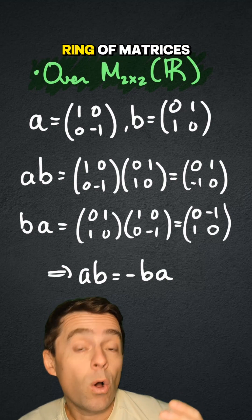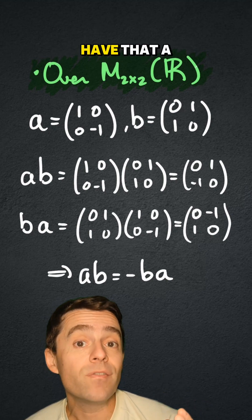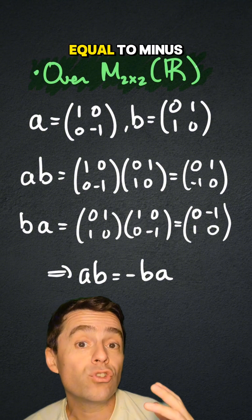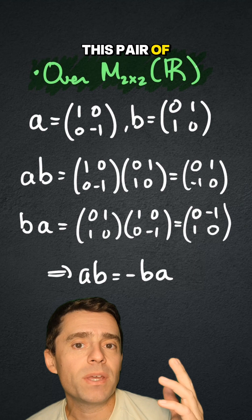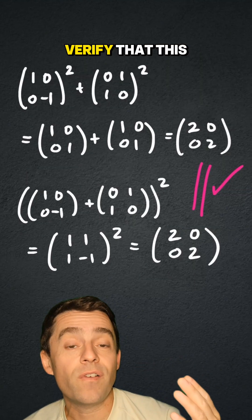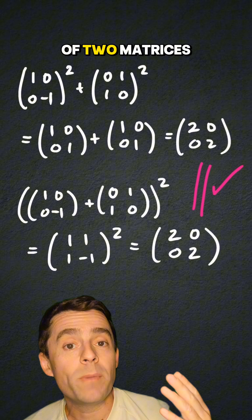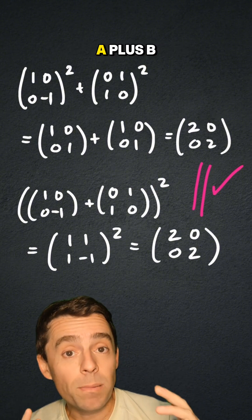And in this ring of matrices, two by two matrices with real coefficients, we can also have that a times b is equal to minus b times a. For example, this is exactly what happens for these pair of matrices a and b. And for such pair of matrices, you can also verify that this is an example of two matrices such that a squared plus b squared is equal to a plus b squared.